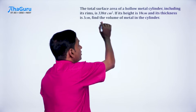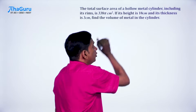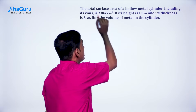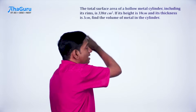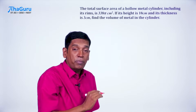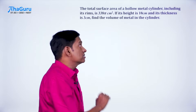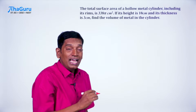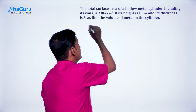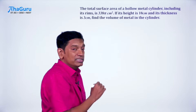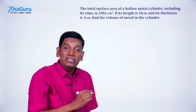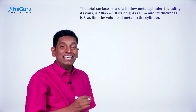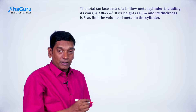The total surface area of a hollow metal cylinder including its rims is 338π centimeter squared. If its height is 10 centimeter and its thickness is 3 centimeter, find the volume of metal in the cylinder.